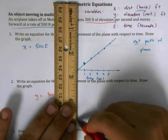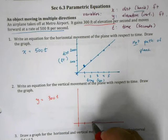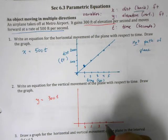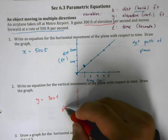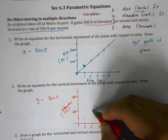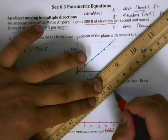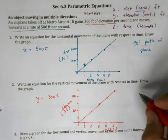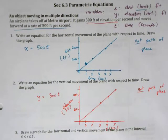We can also graph this. Going five seconds along the time axis, and the elevation axis incrementing by 300 feet per tick mark, we plot the points and draw a line through them. Again, this is also not the path of the plane — it just helps us see what the plane is doing in terms of its vertical distance or elevation.